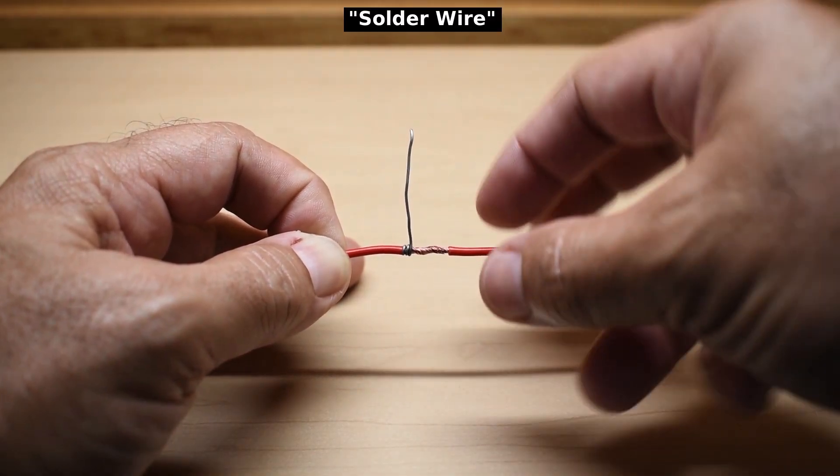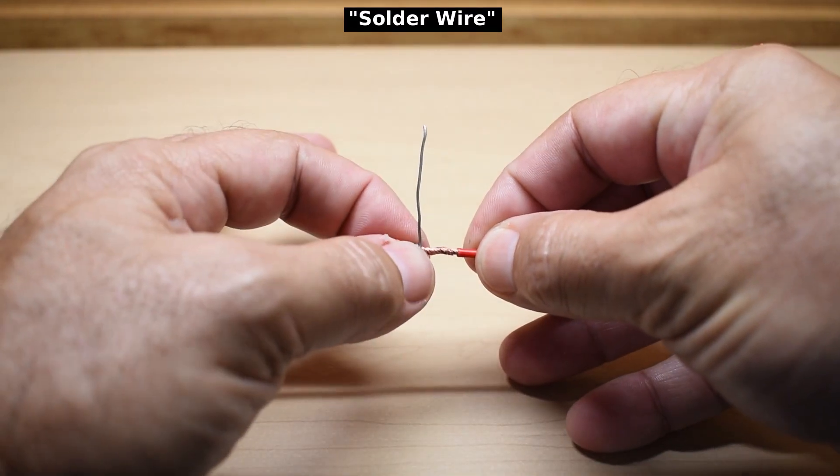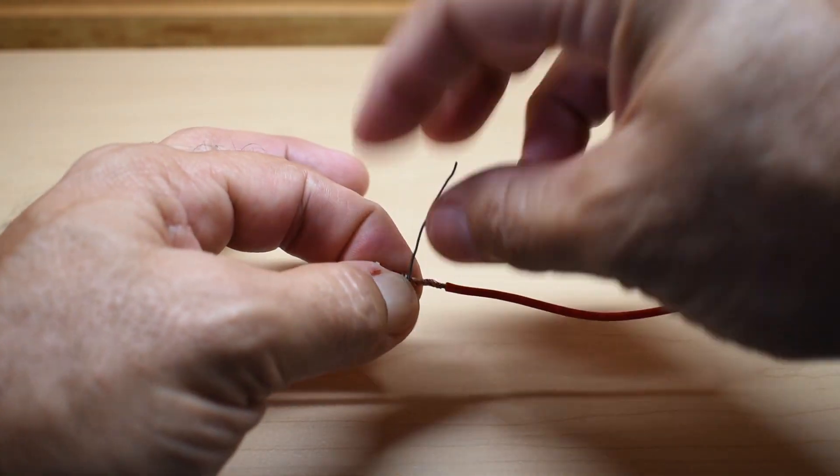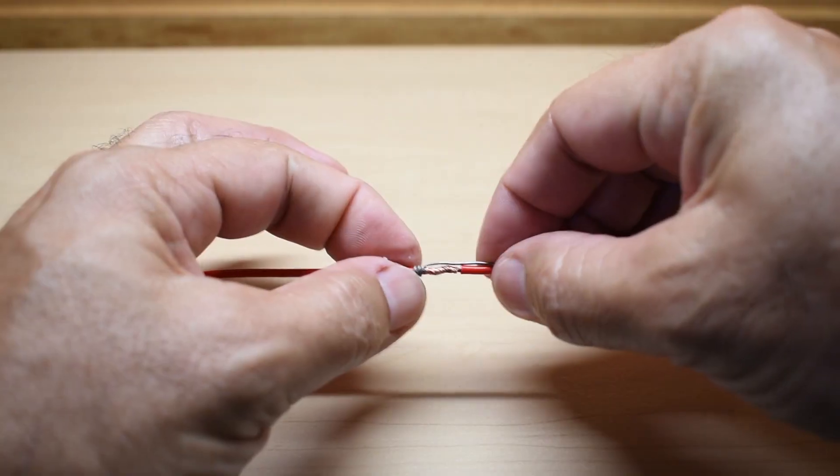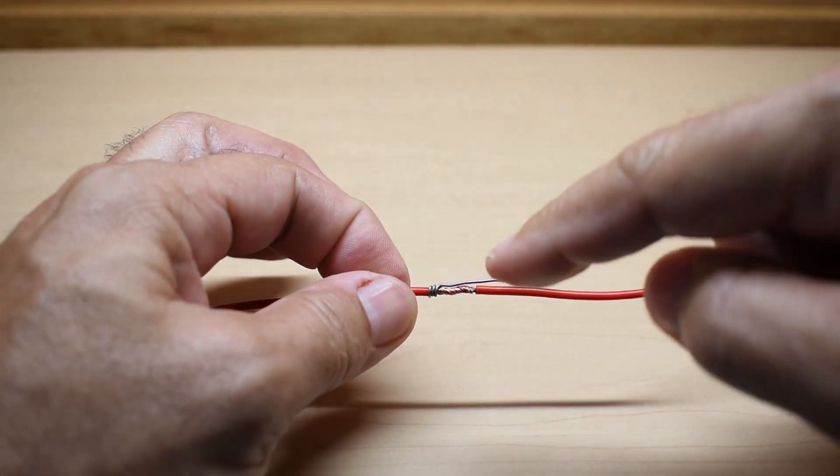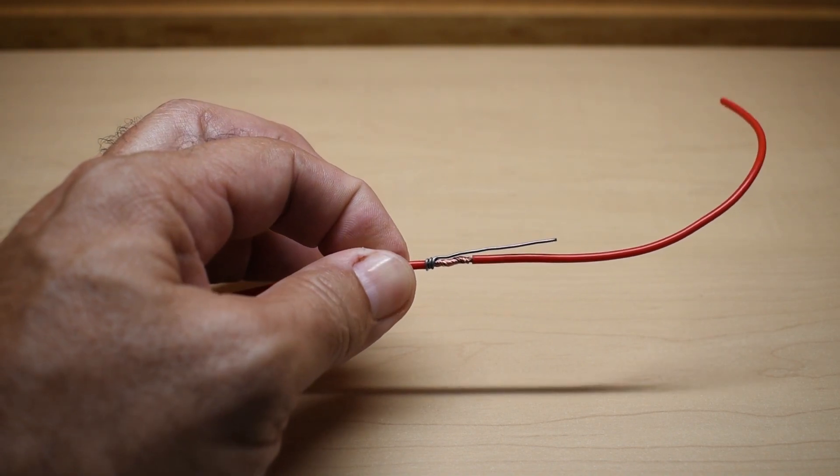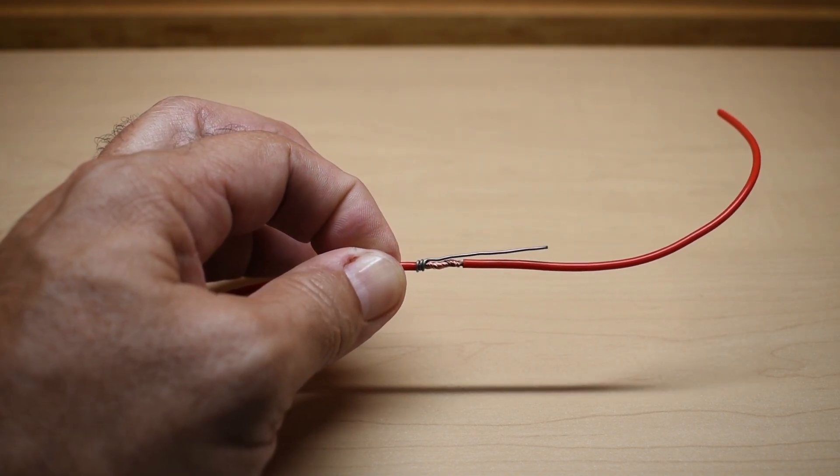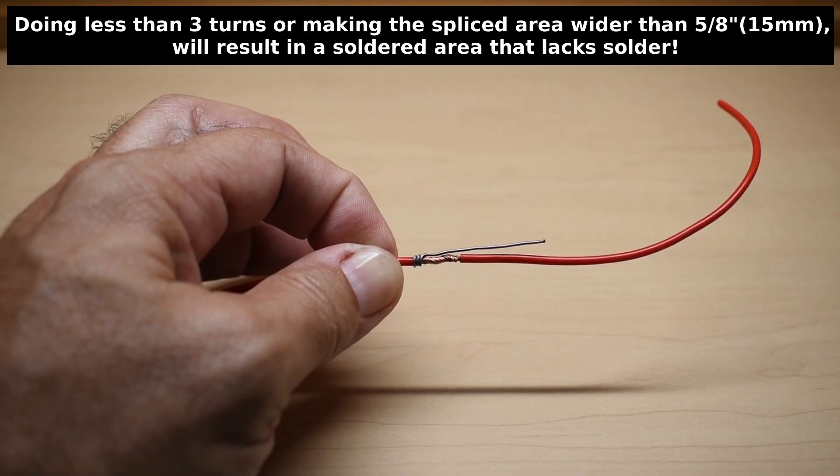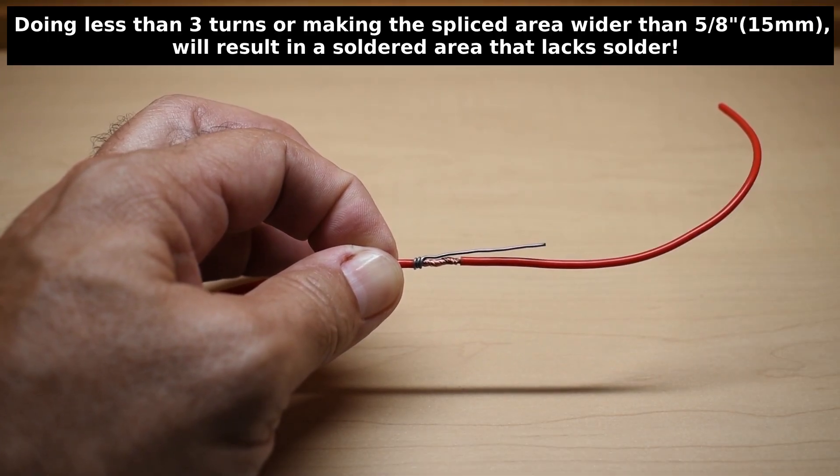Now you're going to take the wire, and you're going to bend it straight across the top like this. Push it down. What you want is you want that wire to stay along the top of the copper wire. Once that's done, you're going to do three wraps on the right side, and then you're just going to trim the solder flush. Let me do that, and I'll come right back.